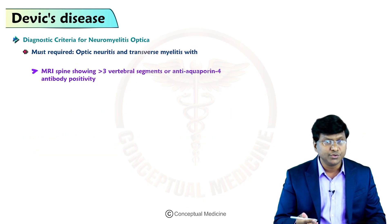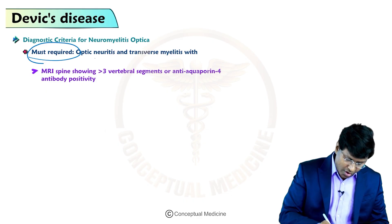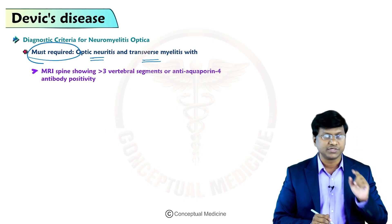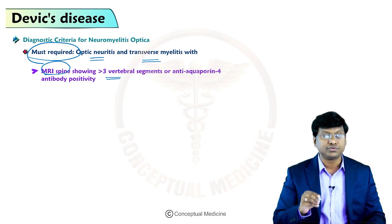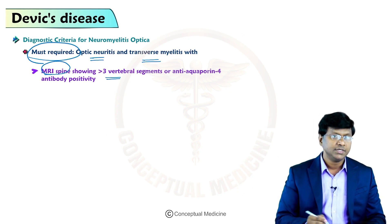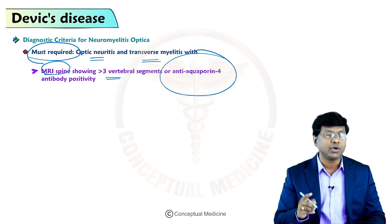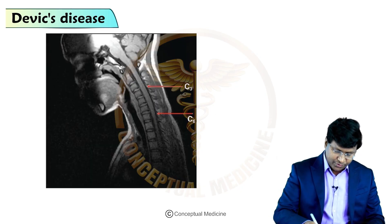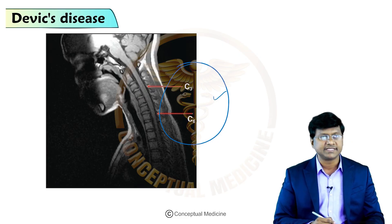The diagnostic criteria for neuromyelitis optica require: optic neuritis and transverse myelitis; MRI of the spine showing involvement of more than or equal to three vertebral segments; and the anti-aquaporin-4 antibody should be positive. The MRI shows involvement from C3 to C6, meaning more than or equal to three vertebral segments are affected.